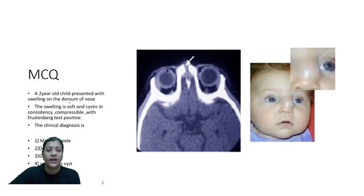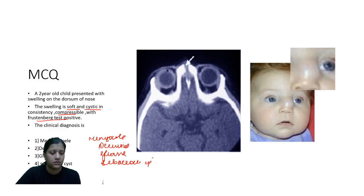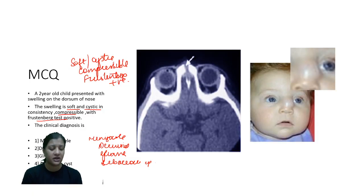A 2-year-old child presented with a swelling on the dorsum of the nose. The swelling is soft, cystic in consistency, compressible, with Frustenberg test positive. The clinical diagnosis is: meningocele, dermoid, glioma, or sebaceous cyst? There seems to be some confusion on this topic, so I will make it easy to understand. We need to know the congenital anomalies in the nasal cavity. First, you need to know what the roof of the nose is made up of.